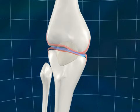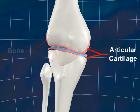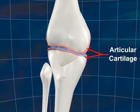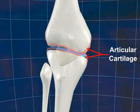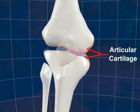Joints are structures that hold two or more bones together. In a healthy joint, the bone ends are lined with articular cartilage that acts as a cushion to absorb the shock of movement.